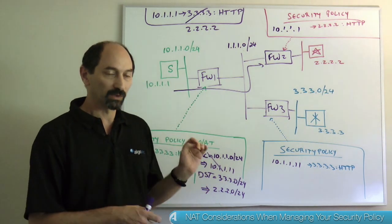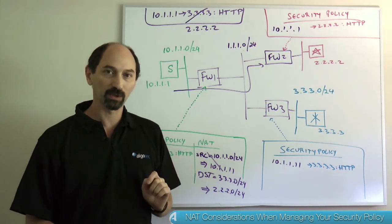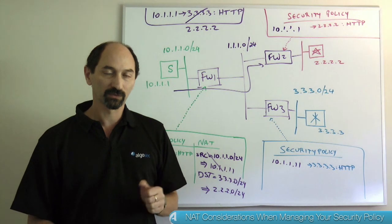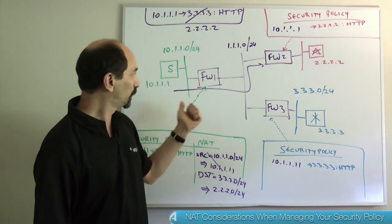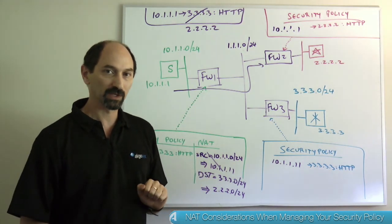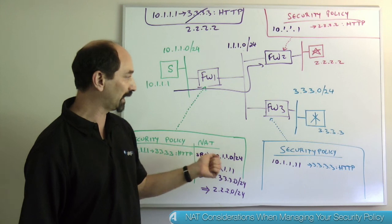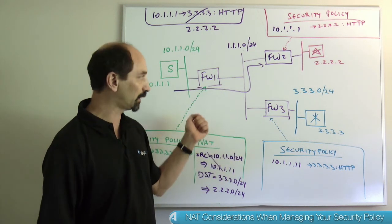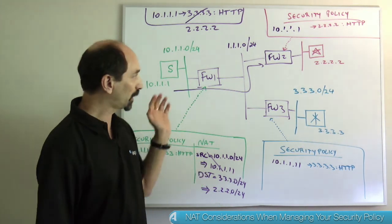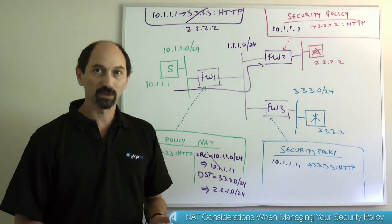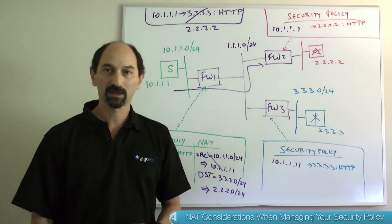To summarize, what you need to take away from this lesson is that you need to understand the NAT policy in your organization: first, to identify the paths through the network and which firewalls you need to modify to allow a particular change request; and second, to actually write the security policy rules on the relevant firewalls correctly. If you're going to use an automated system to help you manage this complexity, you need to make sure that your solution understands the NATting as well, so that it gives you accurate recommendations. Thank you for your attention.